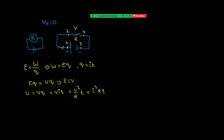Differentiating W with respect to time gives the power delivered by the battery. That is dW/dt = ε × (dQ/dt) = ε × I. So the power delivered by the battery is ε × I.